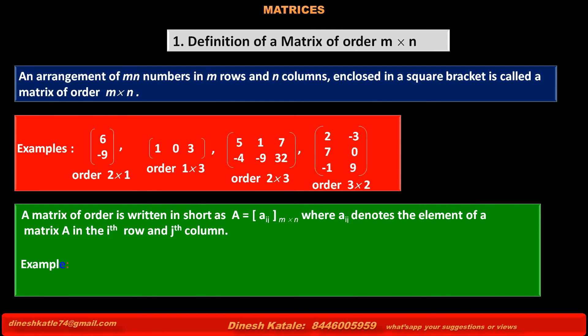See example: capital A equals, in square bracket, small letter aij with order 3 into 2, is equal to matrix A equals a matrix with elements in the first row A11, A12; in the second row A21, A22; and in the third row A31, A32.